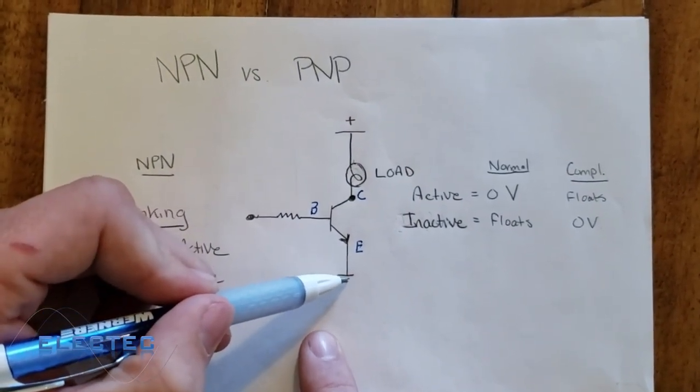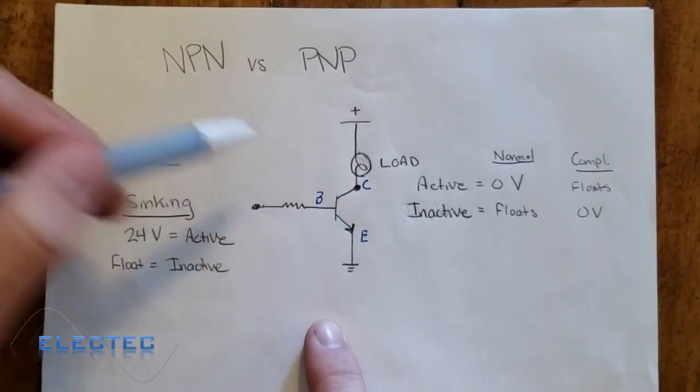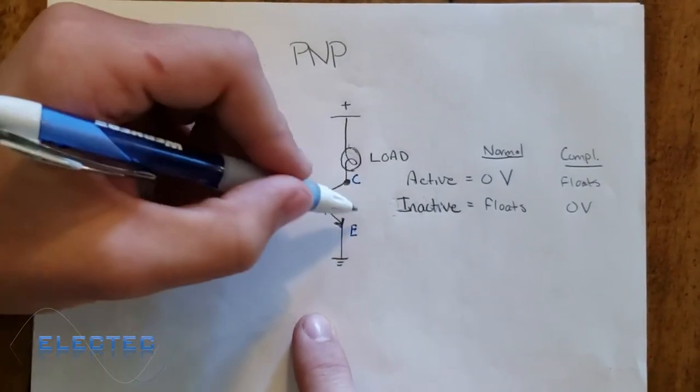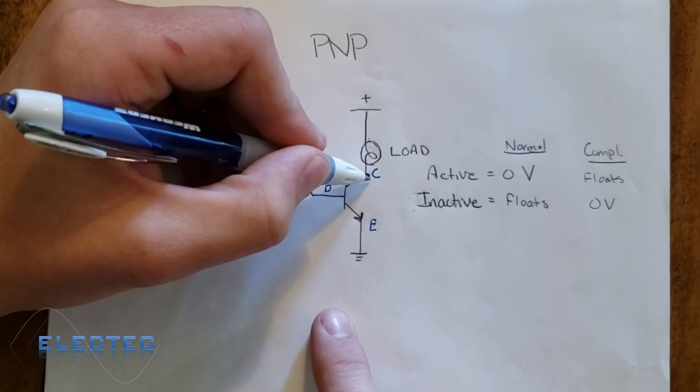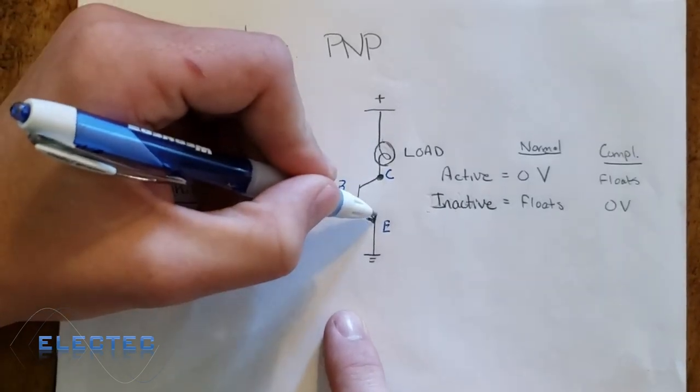So when we source with a positive voltage right here and the NPN transistor sinks it, it activates, it turns on. What it actually does is it connects, in a sense you can think, a wire between the collector and the emitter.